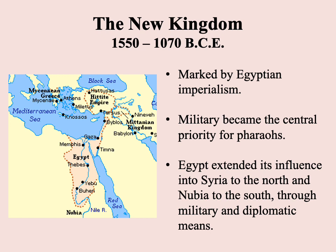The New Kingdom runs from 1550 to 1070 BCE. The defining characteristic of the New Kingdom is that it's very imperialistic. Everything associated with building of empire, controlling other people — this is a period where the Egyptians expand the territory under their control. The military becomes the central priority for pharaohs, and Egypt extends its influence either directly or indirectly to the north into Syria and to the south into Nubia, sometimes militarily, other times by diplomatic means.